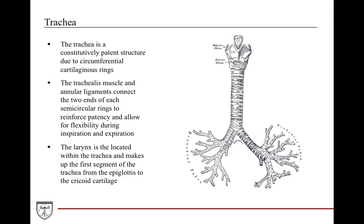First we're going to talk about the trachea. The trachea is a patent structure that's always open, important for respiratory functions, and it's open because it's surrounded circumferentially by cartilaginous rings. These cartilaginous rings surround the trachea but don't go 360 degrees around. In the last portion of that 360-degree area, you have a thing called the trachealis muscle, which allows for expansion and contraction to accommodate certain respiratory situations. You also have annular ligaments that connect the two ends of the semicircular rings for reinforcement of patency and flexibility.